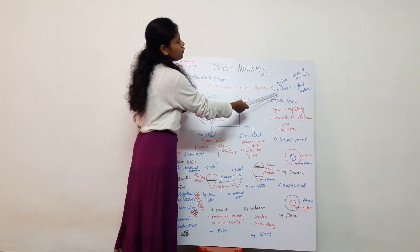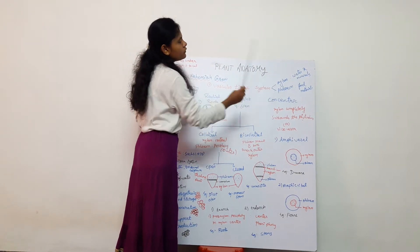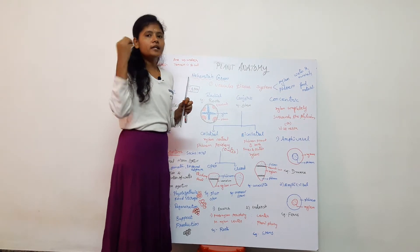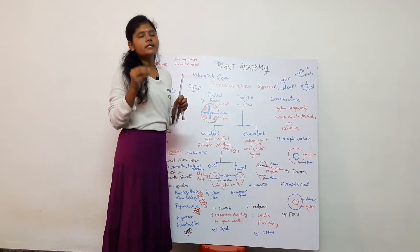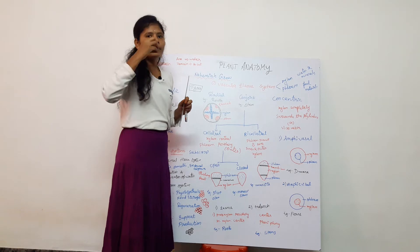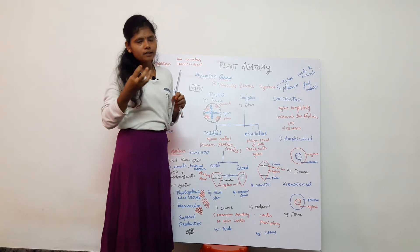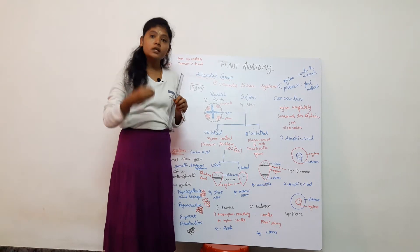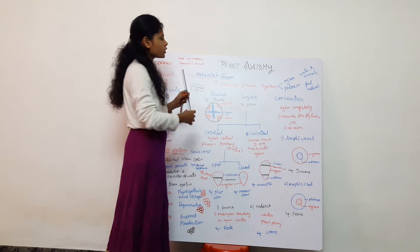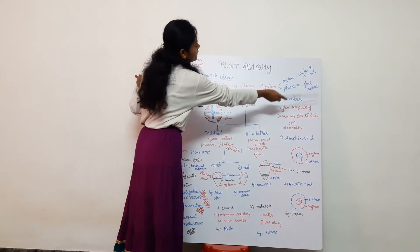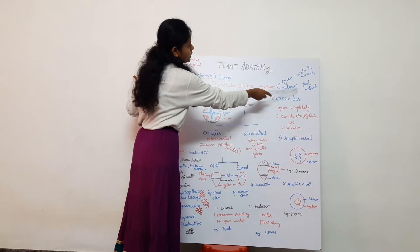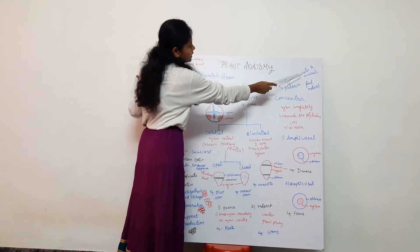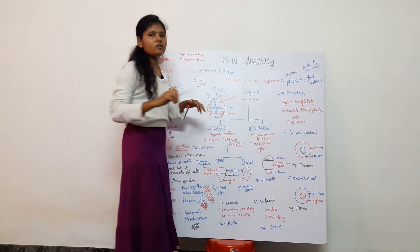Phloem is responsible for transporting food material. Leaves and stems produce food, and the phloem transports it down to the roots and other parts. So xylem is for water conduction and phloem is for food material transport.